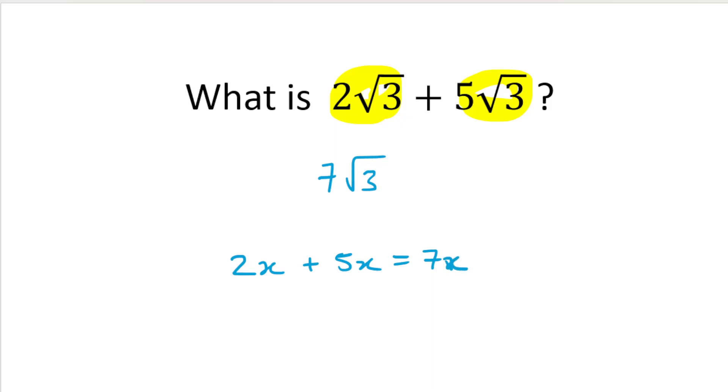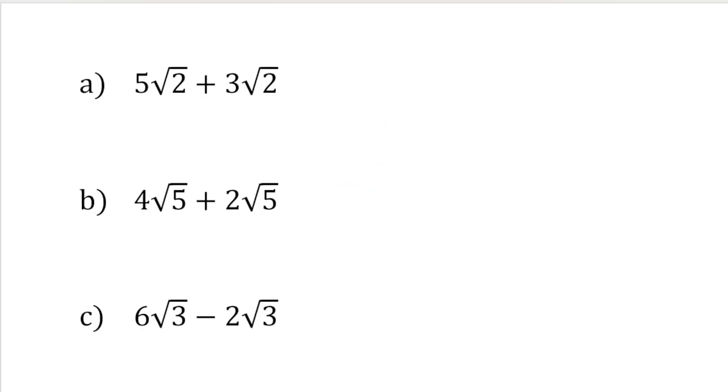Okay, so here we've got 2 lots of root 3 plus 5 lots of root 3 for a total of 7 root 3. So let's just practice that. 5 root 2 plus 3 root 2 would be 8 root 2. And 4 root 5 plus 2 root 5 would be 6 root 5.